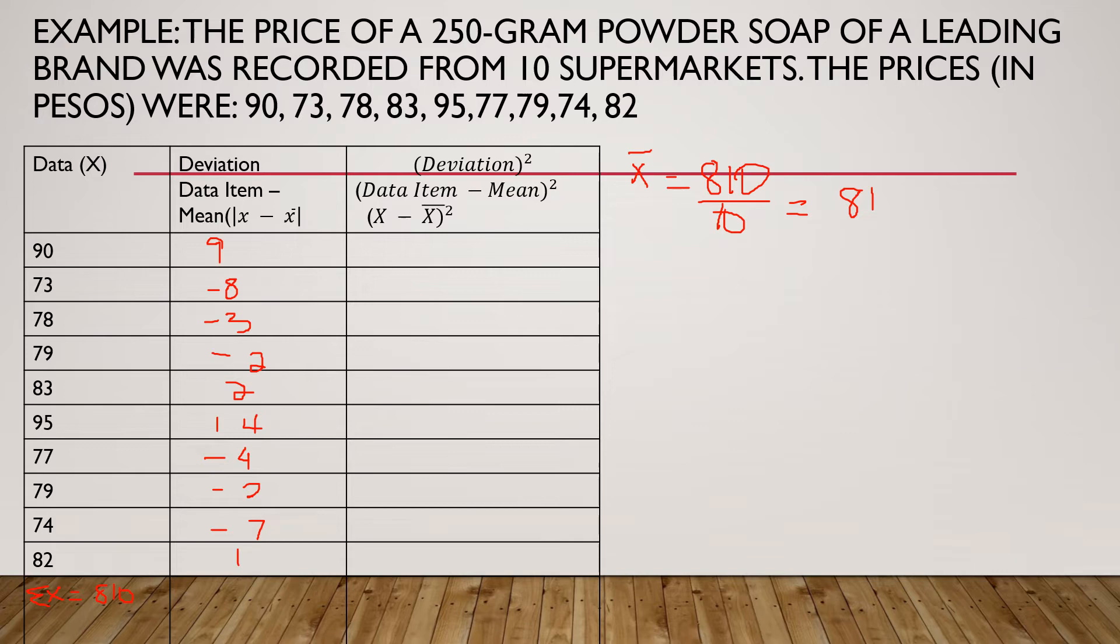Then, square each deviation. 9 times 9 is equals to 81, then 64, 9, 4, 4. 14 times 14 is equal to 196. Then 16, 4, 49, and 1.